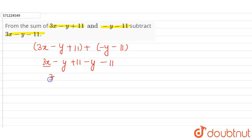So 3x is the only single term where the variable is x. Now minus y and minus y, when we add them we get 2y and the sign will be minus. And plus 11 and minus 11 that is 0.